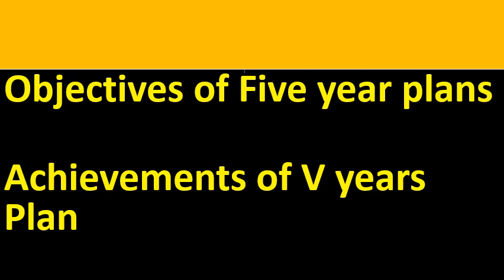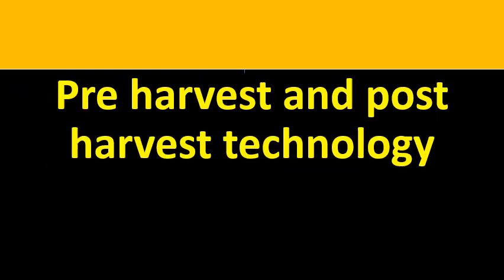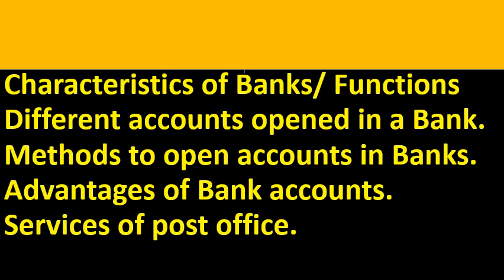Objectives of the five-year plan and achievements of the five-year plan in economics — the first lesson — along with pre-harvest and post-harvest technology and the factors involved in them. In the banking lesson, please know the characteristics of banks, functions of banks, different accounts opened in banks, steps followed while opening an account, and advantages of bank accounts. Please learn all these — at least six points.